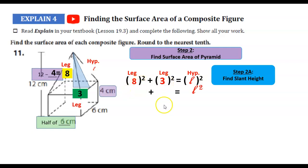What would 8 times 8 and 3 times 3 be? 64 and 9. Let's add those up. That would be 73. Let's square root both sides. That would be, our slant length is 8.54.